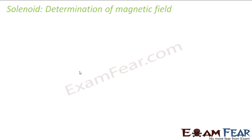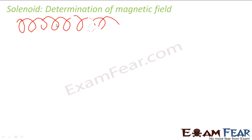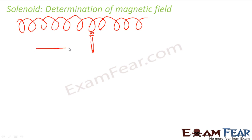Let us now determine the strength of magnetic field in case of a solenoid. Let us suppose we have a solenoid like this and I want to calculate the magnetic field of a solenoid. So I consider a very small element with thickness dx from this solenoid, and I want to calculate the magnetic field inside the solenoid.